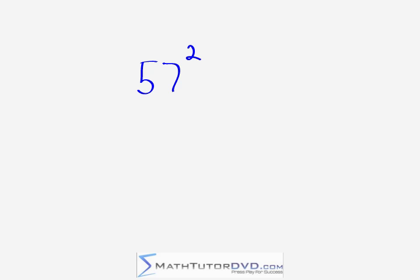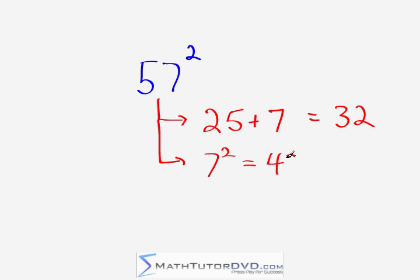Okay, for our next problem, we're going to do 57 squared, and we do exactly the same process. We take the number 25, and we add to it 7. What is 25 plus 7? That's going to be 32. So we think 32 in our head. And then the second thing we do is we take the 7 and we square it, which is the second digit here. 7 times 7 is 49, so in our head, we think 49. And then we put them together, and we're going to get 3,249.